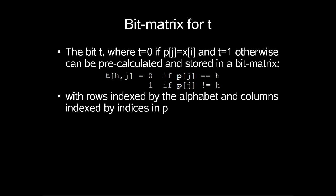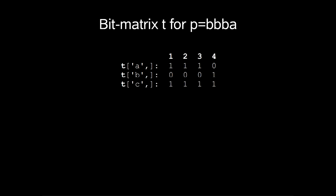The rows are indexed by the alphabet and columns are indexed by indices in p. For our pattern bbba, the bit matrix for t would look like this.